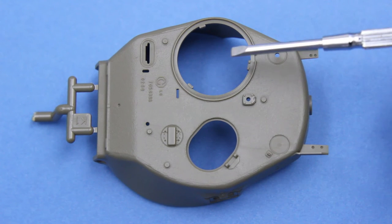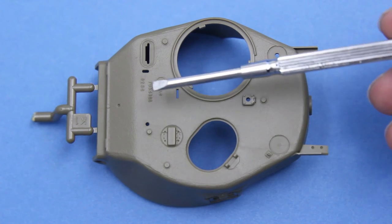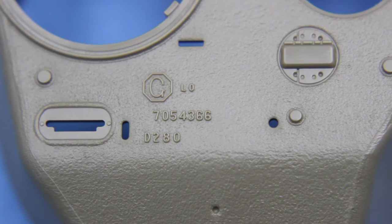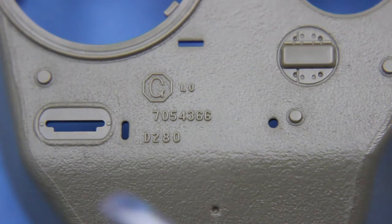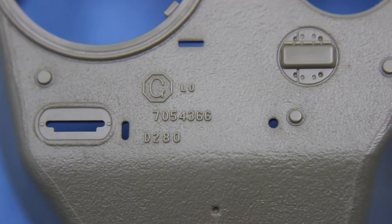The gap for the commander's cupola. And the loader's oval hatch. And some very nice casting numbers. Now these casting numbers appear to be correct for this style of turret. 705 4366 is the drawing number. And that G refers to general steel castings. That would have cast the turret.